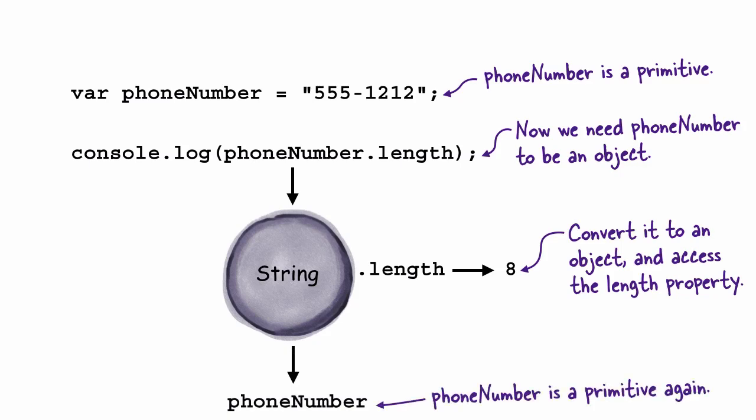And all this is hidden from you. You don't have to think about it or worry about how it's happening. You never have to create string objects or number objects or boolean objects yourself. You just access the properties and methods you need, and JavaScript takes care of converting the primitives to objects and back to primitives again, behind the scenes.